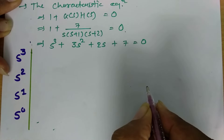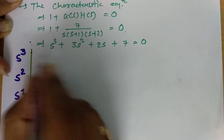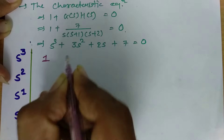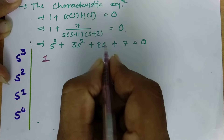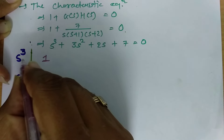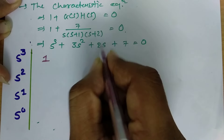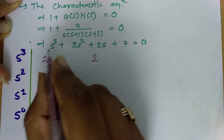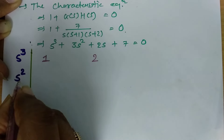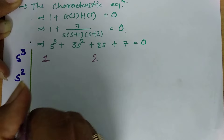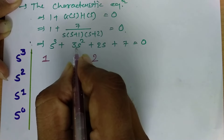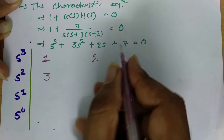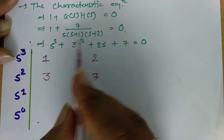For the s³ row, the first coefficient is 1 (multiplied with s³), and we skip to s¹, so the second coefficient is 2. For the s² row, the first coefficient is 3 (multiplied with s²), and the next coefficient is 7. Based on the characteristic equation, we write the coefficients of the Routh array.